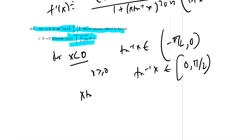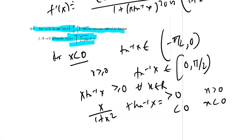x tan inverse x greater than equal to 0 for all values of x in R, and x by 1 plus x squared plus tan inverse x has some values. This is greater than 0 for x greater than 0, less than 0 for x negative, and equal to 0 for x equal to 0.